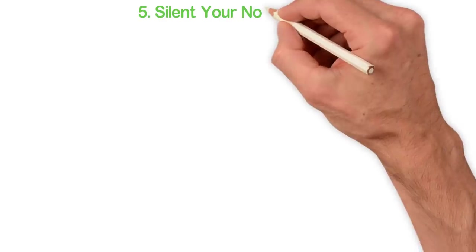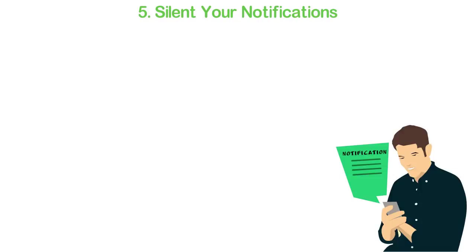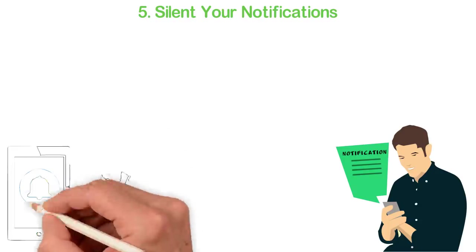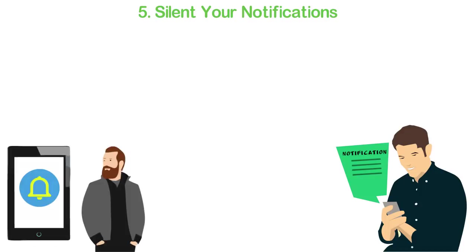5. Silent Your Notifications. We're living in a world filled with too many noise. We've grown so bad that we start worrying if we don't catch up with everything, we'll remain irrelevant. But that's not true. Most things that are happening around us aren't that important. For instance, must you see everyone who likes your social media photos immediately they do? So why do you need notifications for such?